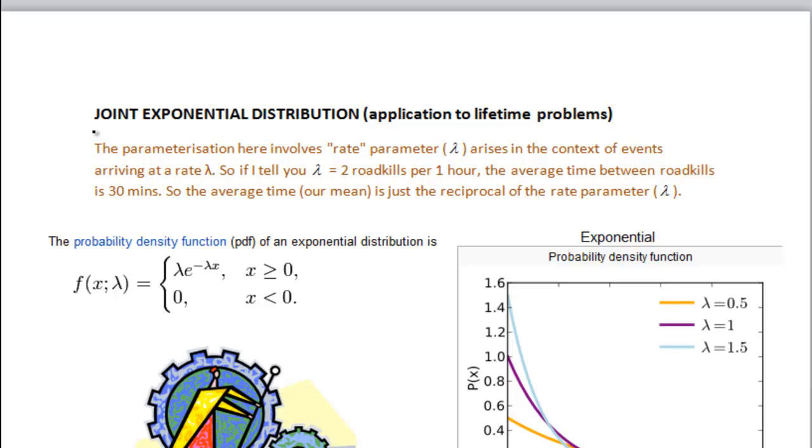Okay, so I've been asked to do an example involving joint exponential distributions. So let's first of all remind ourselves what the probability density function is of the exponential distribution. Well, it looks like this and you can see it's got a strange parameter here called lambda. So this parameter lambda has actually quite a precise meaning. This is a rate parameter and we are told that it arises in the context of events arriving at a rate lambda.